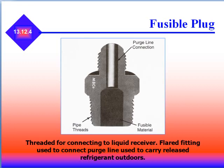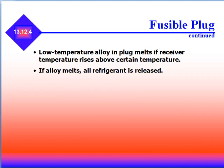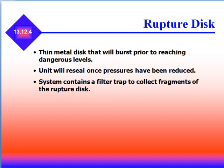The fusible plug is threaded for connecting to a liquid receiver, and a flared fitting is used to connect the purge line outdoors to carry released refrigerant outside. The low temperature alloy in the plug melts if the receiver temperature rises above certain temperatures; if the alloy melts, all the refrigerant in the system is released. A thin rupture disc is also a type of relief valve — a thin metal disc that will burst prior to reaching dangerous pressure levels. The unit will reseal once pressures have been reduced, and the system contains a filter trap to collect refrigerant fragments of the rupture disc.